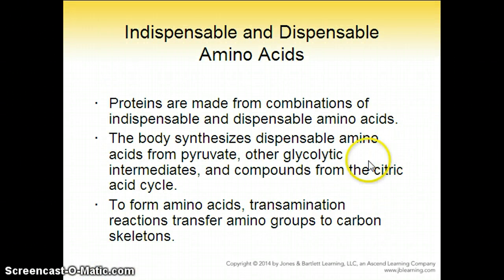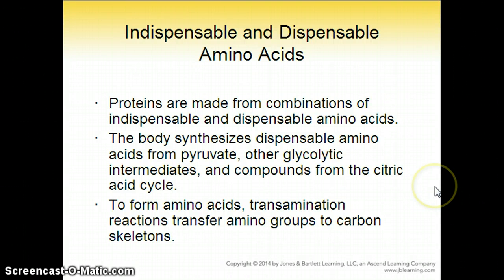Indispensable and dispensable amino acids. Proteins are made from combinations of indispensable and dispensable amino acids. The body synthesizes dispensable amino acids from pyruvate, other glycolytic intermediates, and compounds from the citric acid cycle. To form amino acids, transamination reactions transfer amino groups to carbon skeletons.